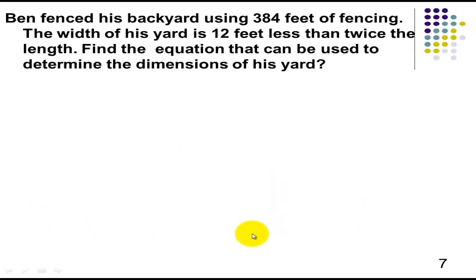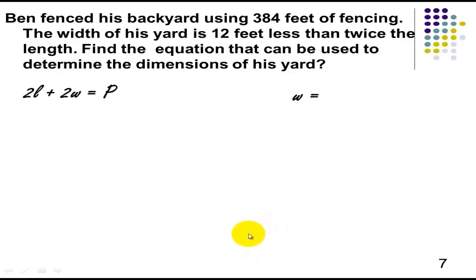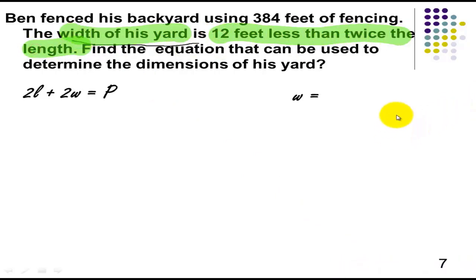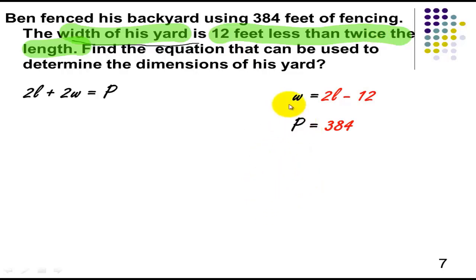Next. Ben fences his backyard using 384 feet of fencing. The width of his yard is 12 feet less than twice the length. Find the equation that can be used to determine the dimensions of his yard. The given is W is 12 feet less than twice the length. Remember, 'less than' we write backwards: W equals 2L minus 12. The perimeter is given as 384 feet. So we are going to replace W by 2L minus 12.